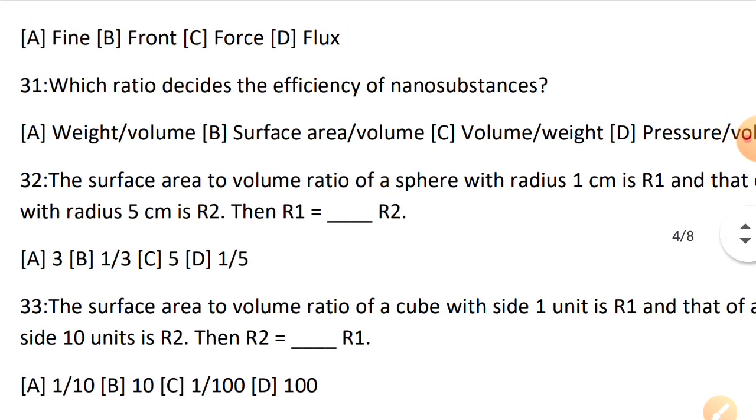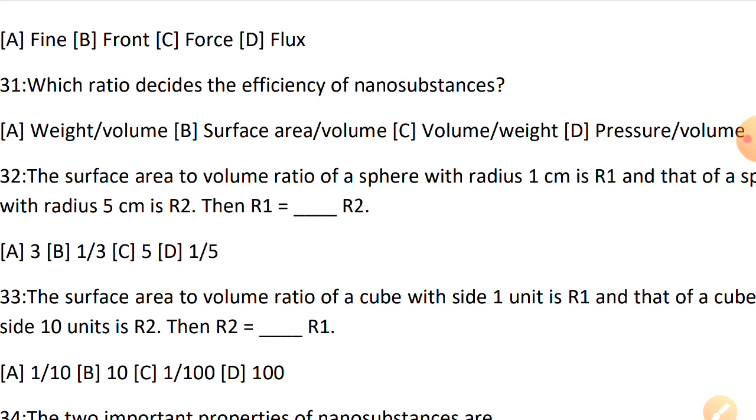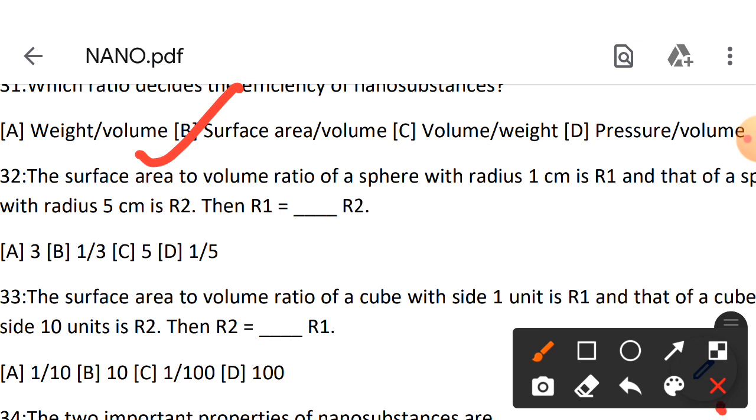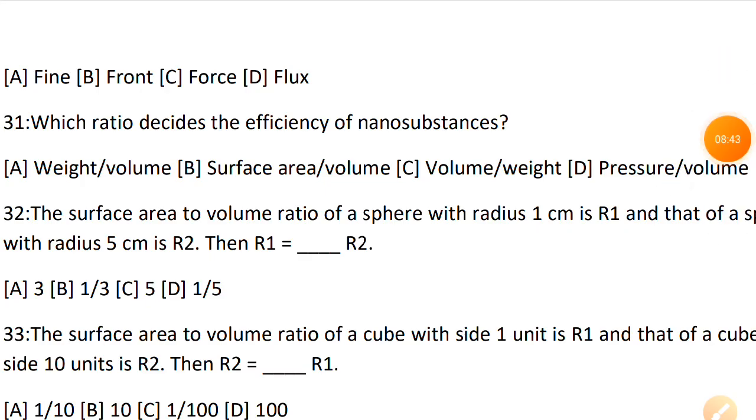Next: Which ratio decides the efficiency of nanosubstances? Nanosubstances obviously have very small particles with very small size. How do we see these things - weight and volume? No, weight is not much because they're small particles. Surface area and volume? Yes, it can be possible, because you can talk about surface area and volume of small particles. Volume and weight? No, weight again not possible. Pressure and volume? No. So the relevant answer from these is B. You can find out from their surface area and volume how efficient your nanosubstance is.